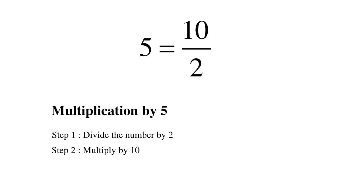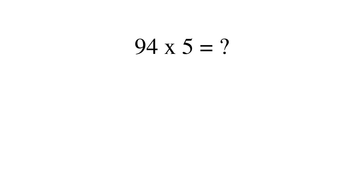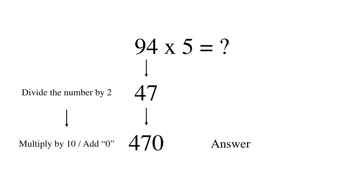Let's work on this example: 94 multiplied by 5. Dividing 94 by 2, we get 47. And then multiplying 47 by 10, we get 470. So the answer is 470.